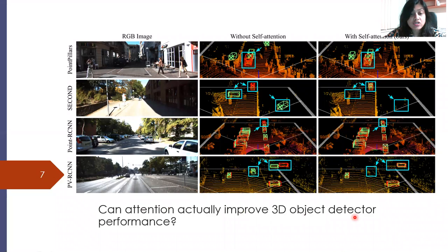We asked the question: can attention actually improve 3D object detection performance? We find that we can detect objects which are missed by the baseline. These baselines include Point Pillars, SECOND, Point R-CNN, and PV-RCNN. These are some detections which have been missed by the baseline, but we managed to detect them using self-attention augmented globally aware features.